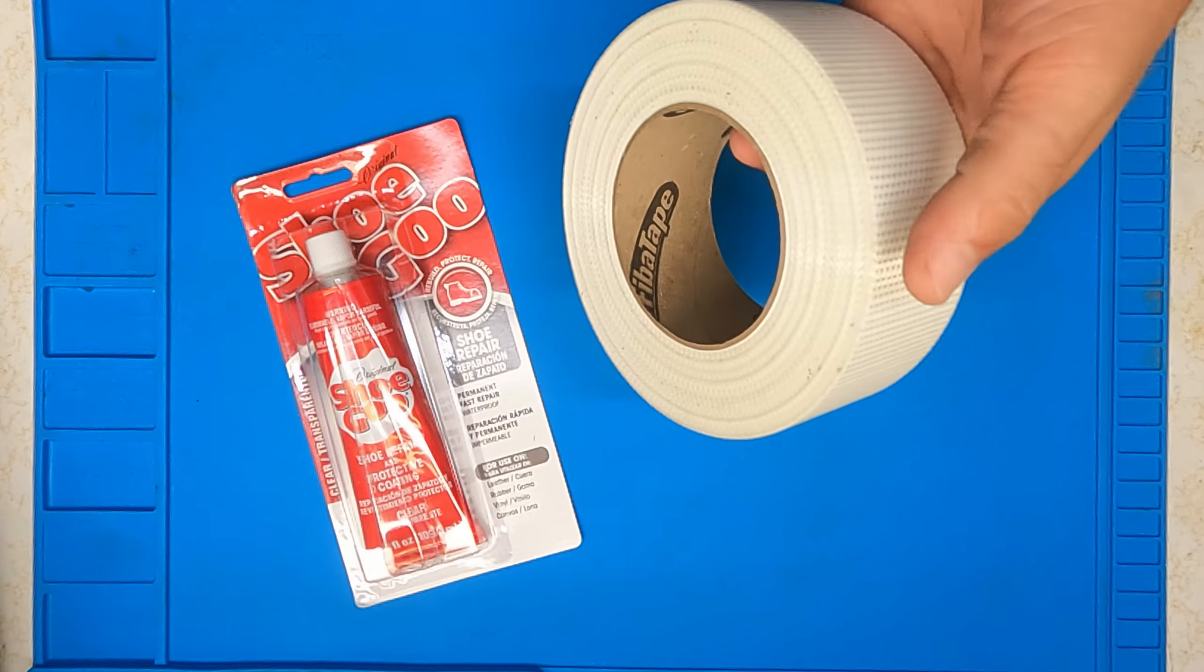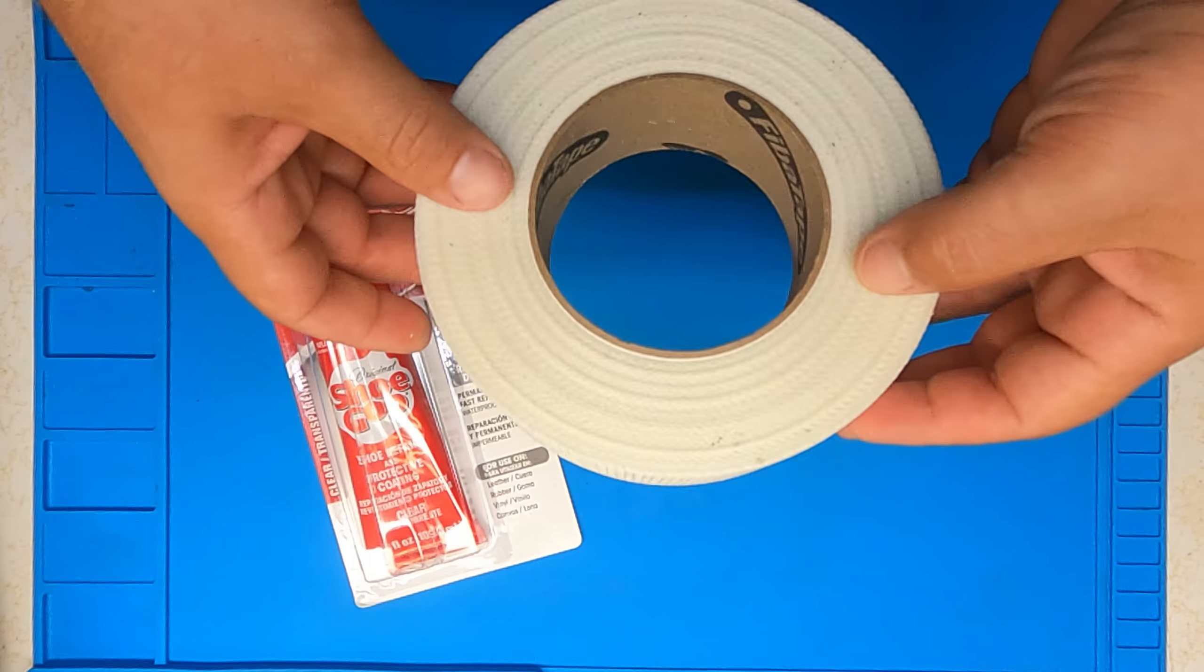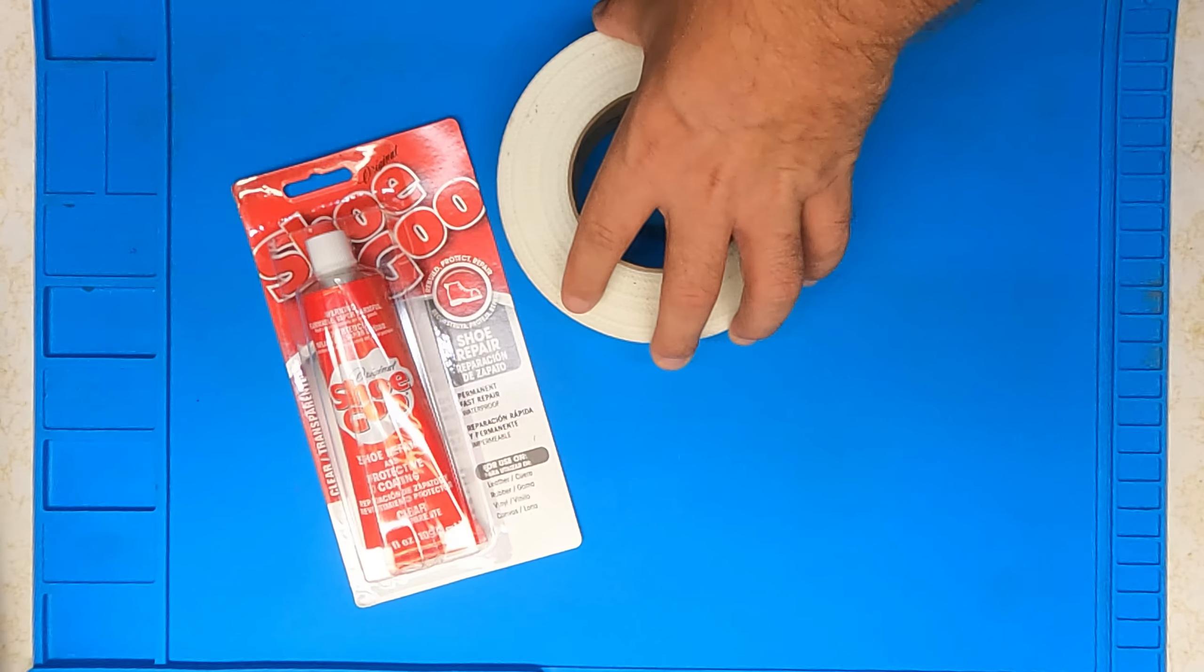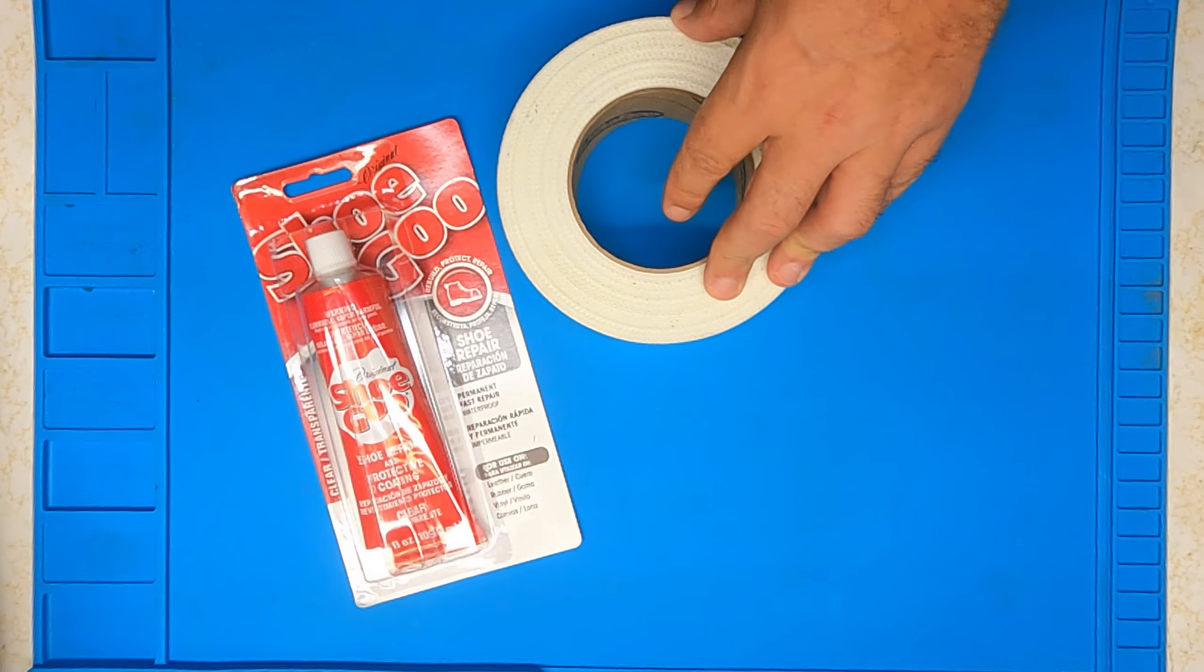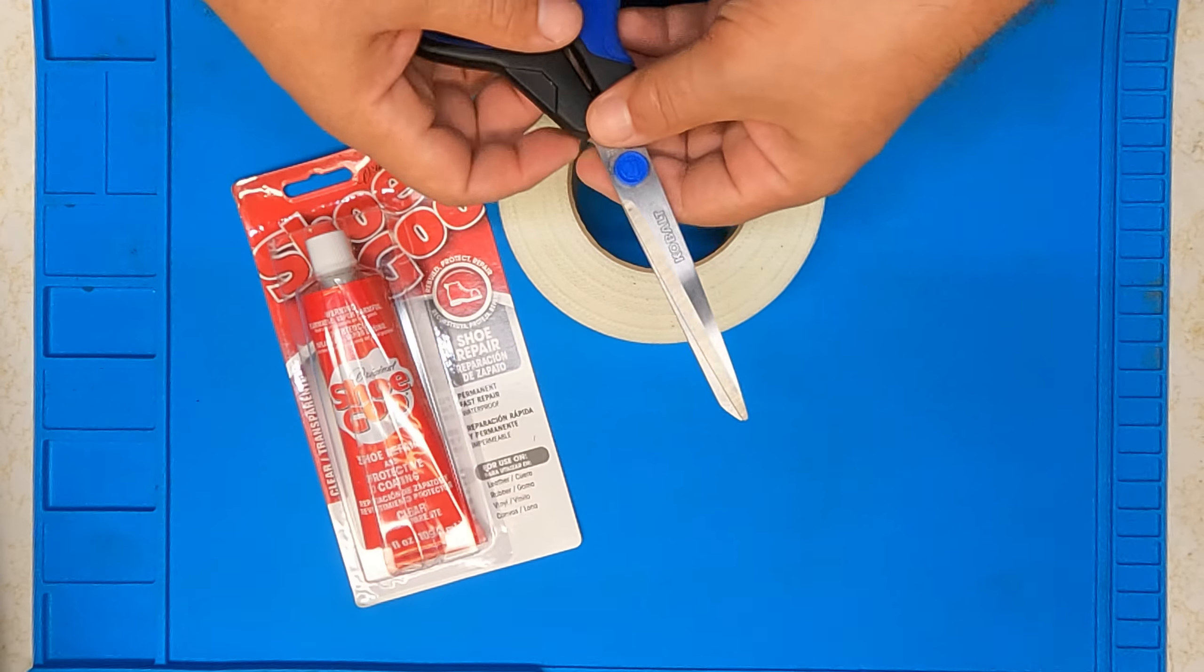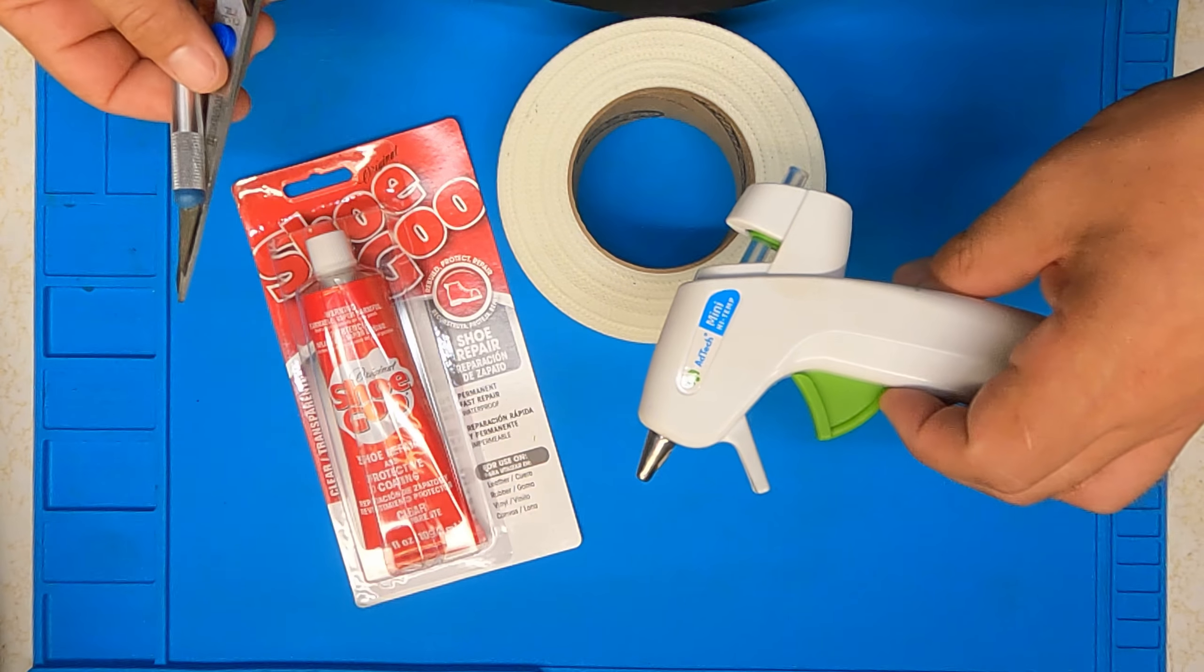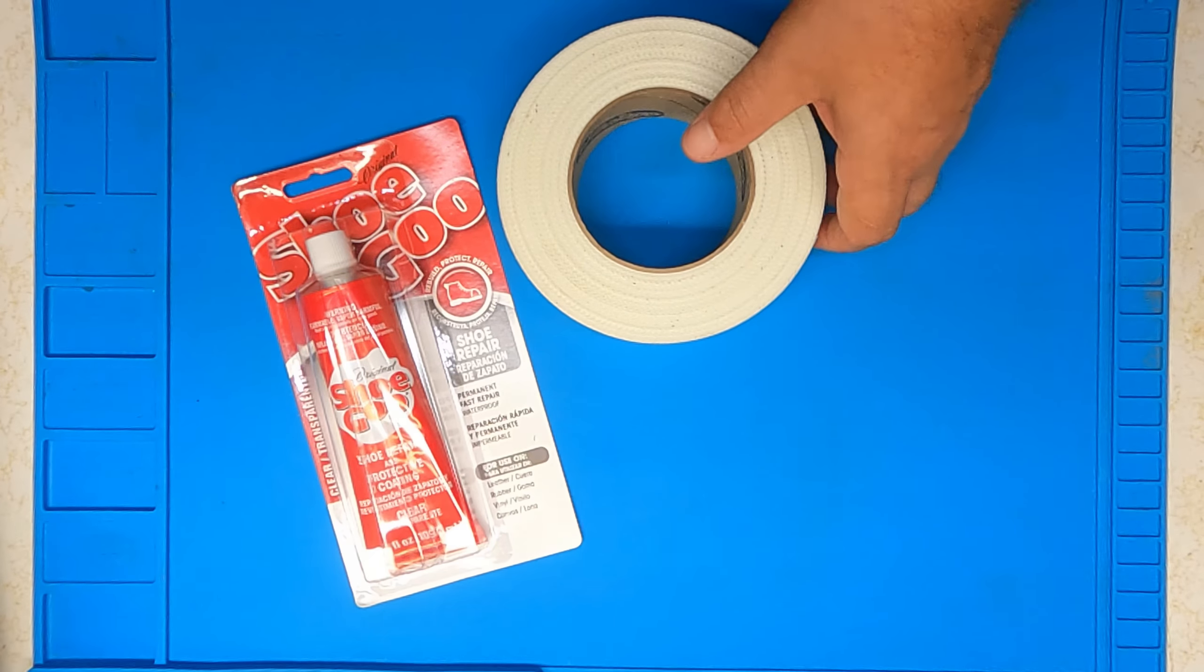To start off, obviously you're going to need the Shoe Goo, a nice high quality fiberglass tape. This one is actually a low profile. It's very important that it's a good quality tape and that it adheres well because you're going to have issues later on if you don't. You want a nice sharp pair of scissors, a good sharp hobby knife, and then lastly, a hot glue gun.